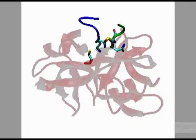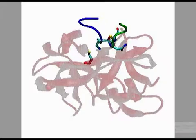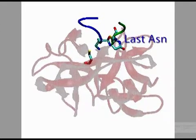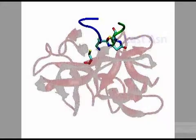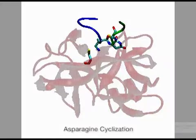The next step is the cyclization of the asparagine residue that is the last residue on the C-terminal side of the Intein. This occurs by attack of the backbone carbonyl by the side-chain nitrogen of the asparagine residue. This is the artificially stabilized transition state of the asparagine cyclization step.